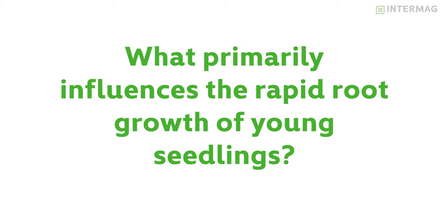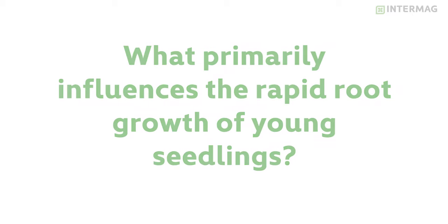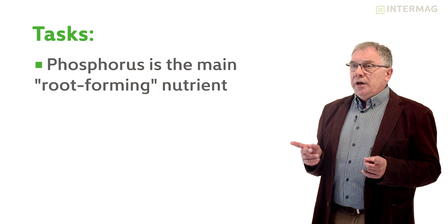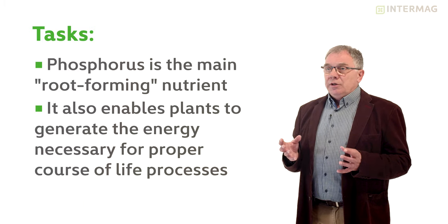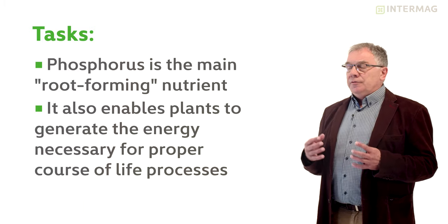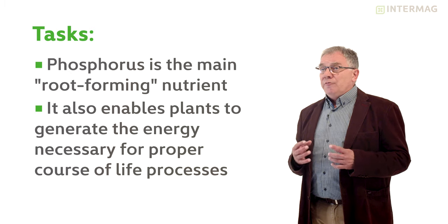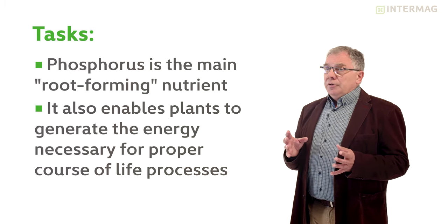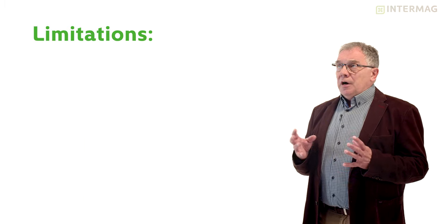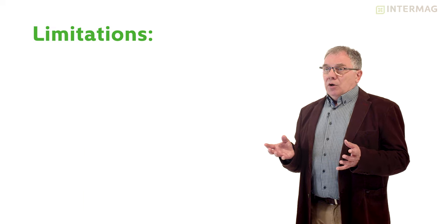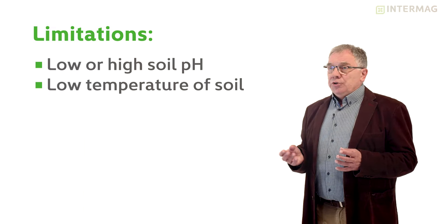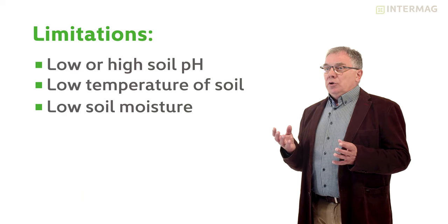The question is what primarily influences the rapid growth of roots of young seedlings. And the answer is phosphorus. Phosphorus is the main root-forming nutrient. It also enables plants to generate the energy necessary for a proper course of the life processes. But unfortunately there are some limitations of uptake of phosphorus by plants, mostly low or high soil pH, low temperature of soil and low soil moisture.